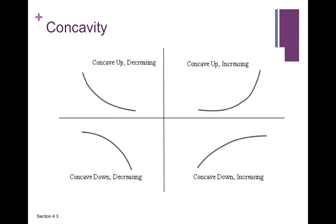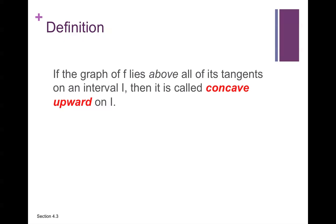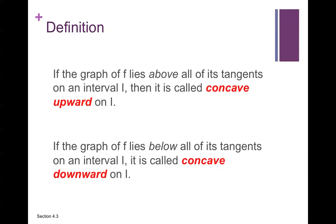Now, concavity. Concave up looks like a cup facing upward — the curve can be decreasing but bending upward, or increasing and bending upward. Concave down is facing downward — the curve can be increasing and facing down, or decreasing and facing down. By definition, if the graph of f lies above all of its tangents on an interval I, then it is called concave upward on I. If the graph lies below all of its tangents on I, it is called concave downward on I.